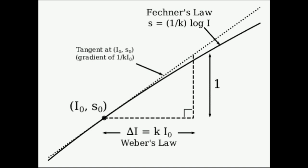If the mass is doubled, the differential threshold also doubles to 10 G, so that 210 G can be distinguished from 200 G. In this example,